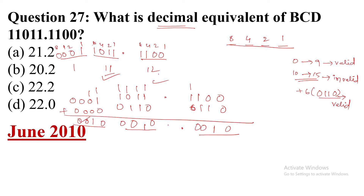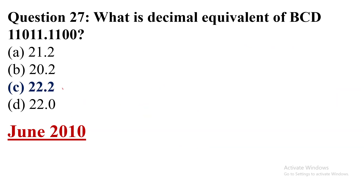When converting BCD to decimal, we take each 4-bit group using weights 1, 2, 4, 8. We have two groups before the decimal point, each giving the value 2, and one group after the decimal point also giving 2. So the decimal equivalent is 22.2. Option number C is the correct answer. Thank you very much for watching this video.